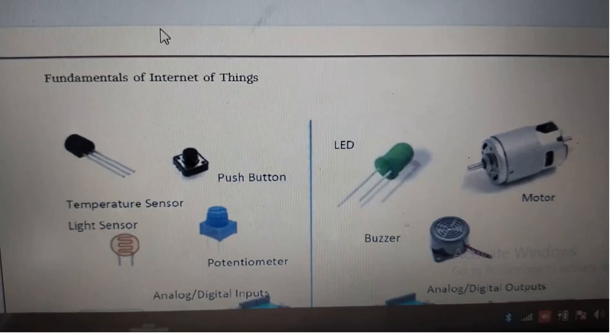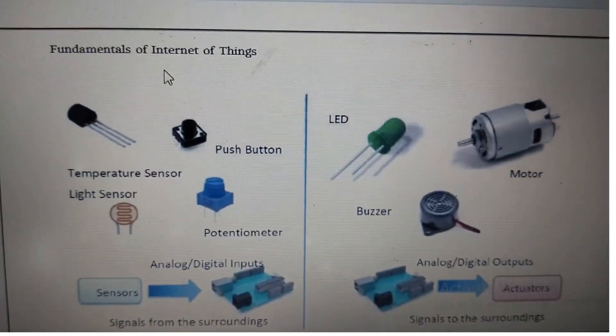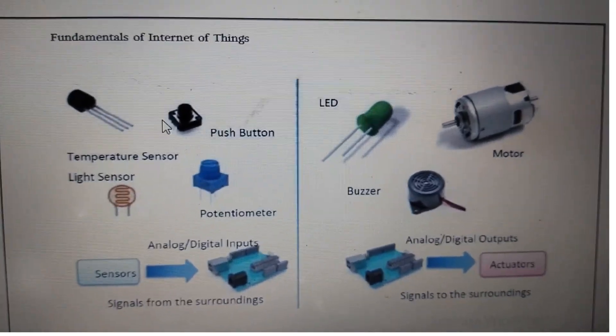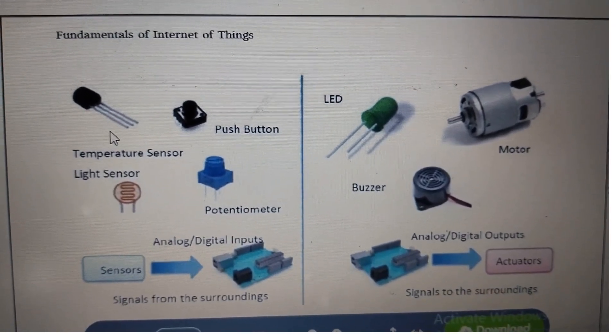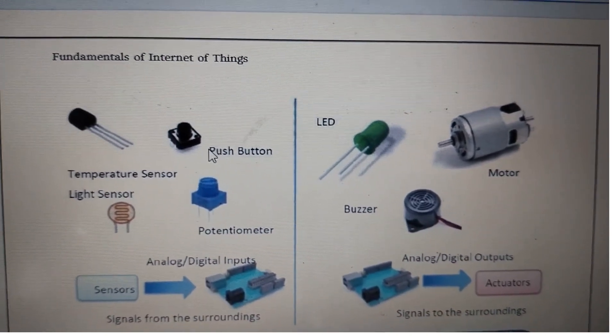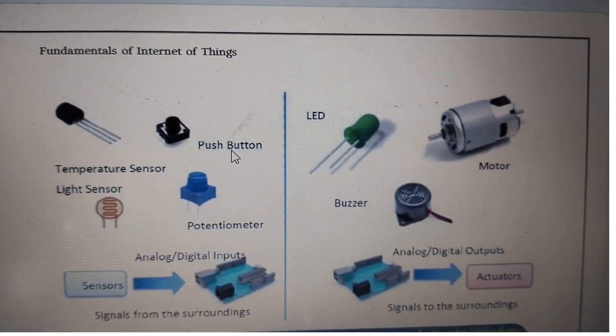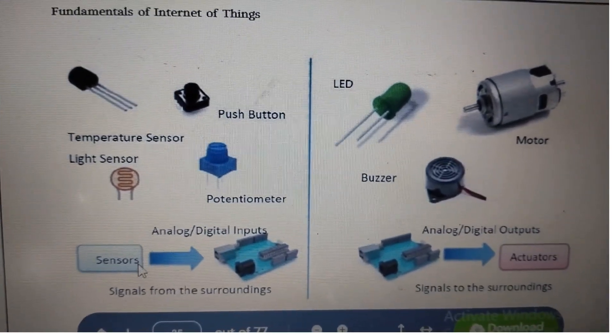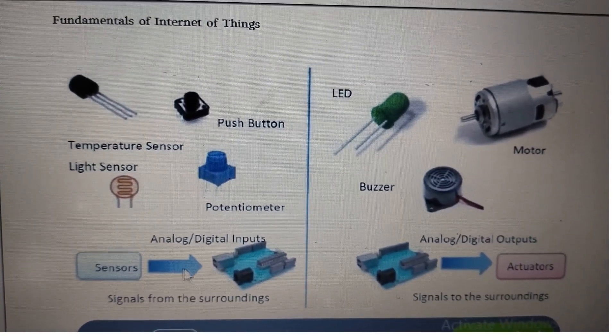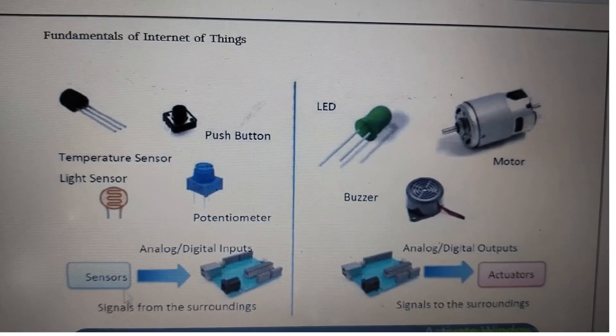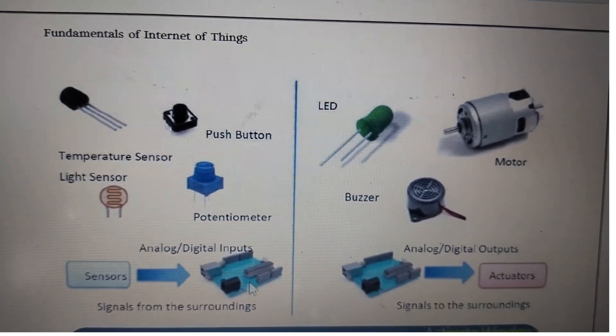This is a temperature sensor, this is a light sensor, and this is a push button. When you press the push button, it acts as a pressure sensor. These sensors convert data and capture signals from the surroundings, providing analog or digital inputs.